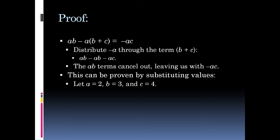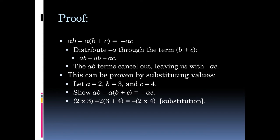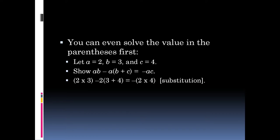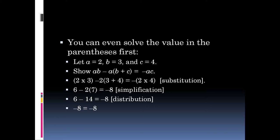This can be proven by substituting values. Let a equal 2, b equal 3, and c equal 4. We expect 2 times 3 minus 2 parentheses 3 plus 4 to equal negative 2 times 4. Simplifying: 6 minus 6 minus 8 equals negative 8. Negative 8 does equal negative 8. Alternatively, solving inside parentheses first by PEMDAS: 6 minus 2(7) equals 6 minus 14 equals negative 8. Both methods confirm the same result.